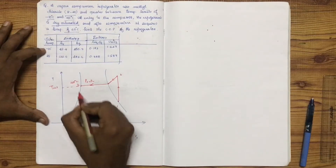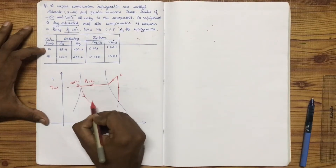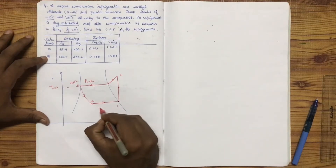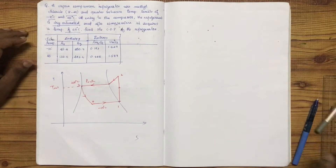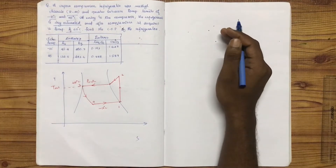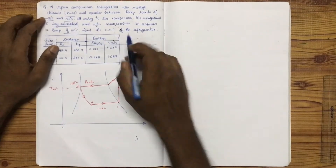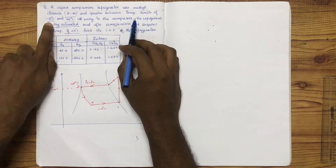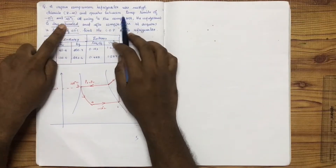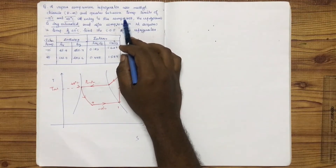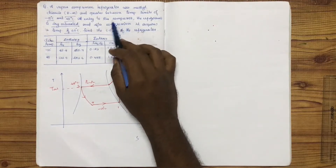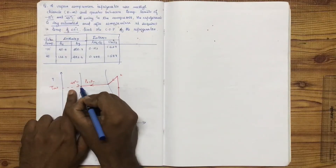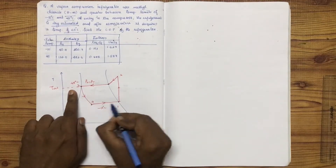On the T-S diagram, process 3 to 4 is the expansion, and 4 to 1 is again evaporation. The temperature for process 4 to 1 is minus 10 degrees Celsius. The temperature limits are minus 10 degrees Celsius and 45 degrees Celsius — the condenser saturation temperature.